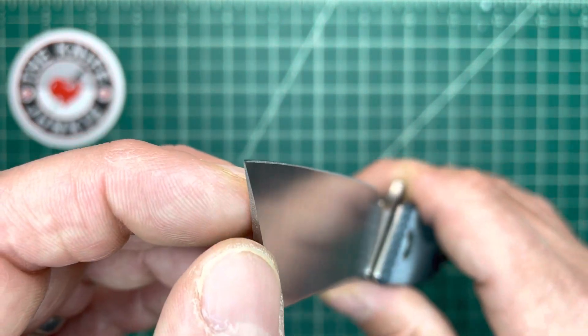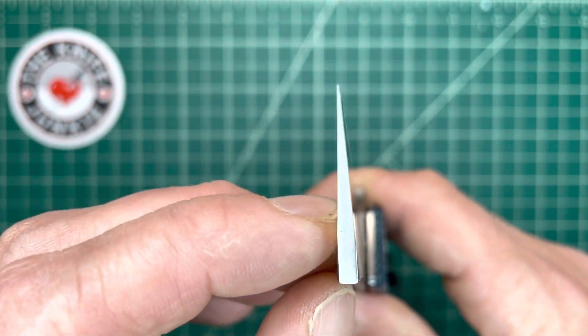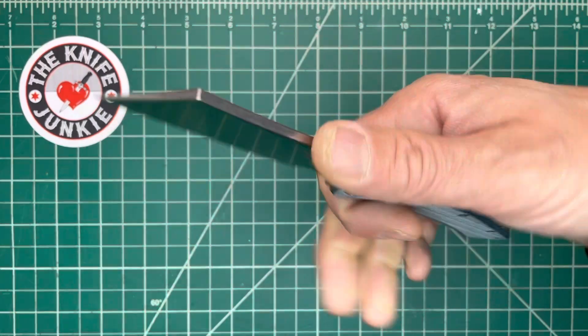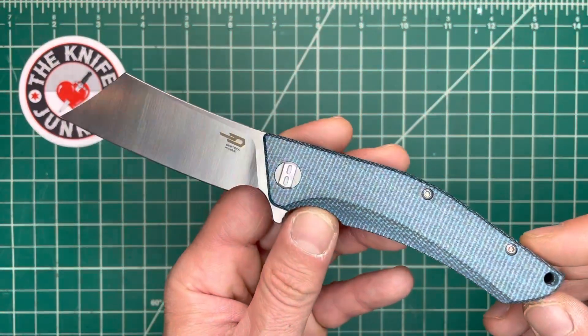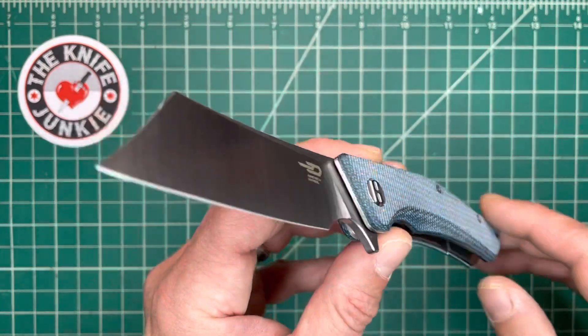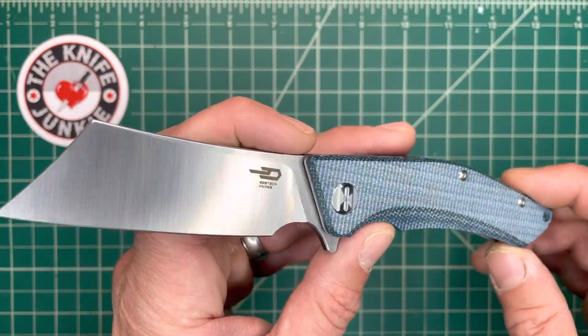It's thin behind this edge here, but it does wedge up quite a bit to give you some meat for splitting and, you know, splitting apart cardboard and zip ties and that kind of cutting.